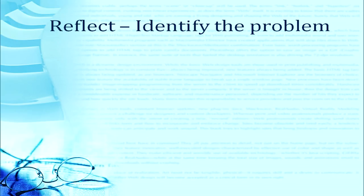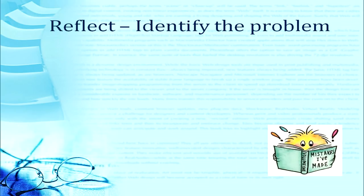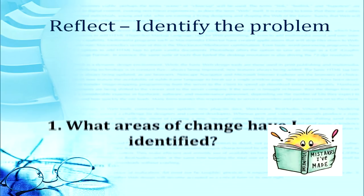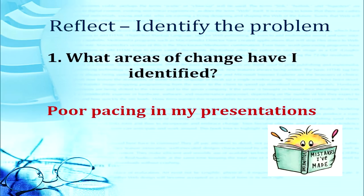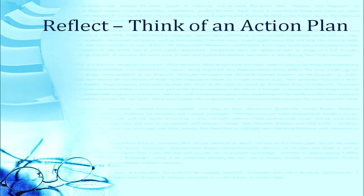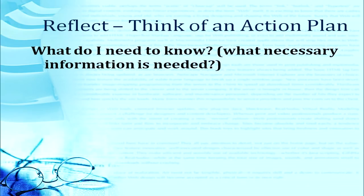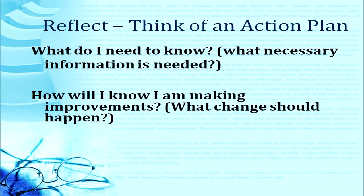Reflecting and identifying the problem in the class — what I have taught, where I was very good, where there was a problem and the students could not understand, what areas of change I have identified. Is it in my questioning skill? Is it in my ability to demonstrate? Is it in my ability to present myself in the class? Maybe the presentation has poor pacing and is taking more time. So we have to think of an action plan — what to do next, what exactly I want to change, where I went wrong.